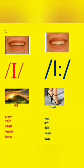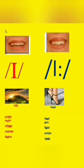For the short vowel, we have 'ee' as in 'heel,' and other examples like 'pretty,' 'miss,' 'village,' 'women,' and 'fetus.' For the long vowel, we have 'ee' as in 'heel,' and examples like 'beat,' 'eve,' 'field,' 'please,' and 'key.' Those are the examples we have there.